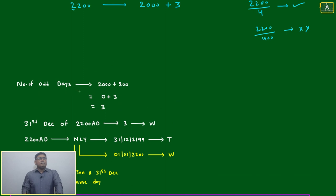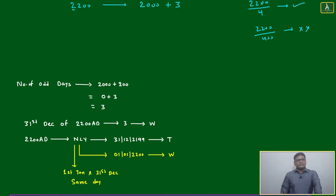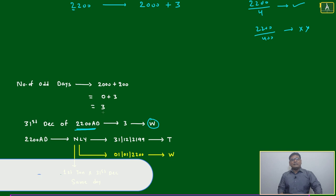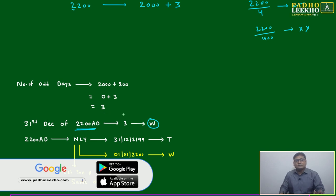Number of odd days will be 2000 plus 200, which is 0 plus 3. Means 31st December of 2200 will be Wednesday because we are getting three number of odd days.